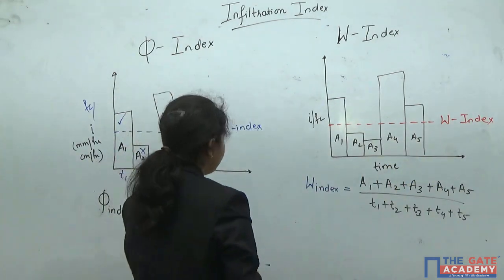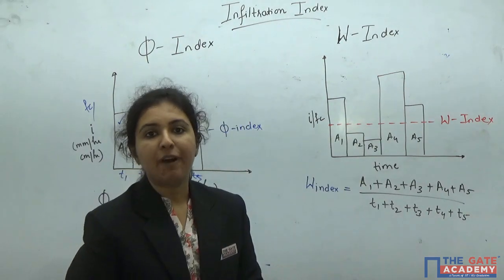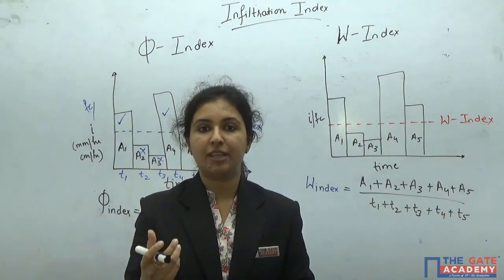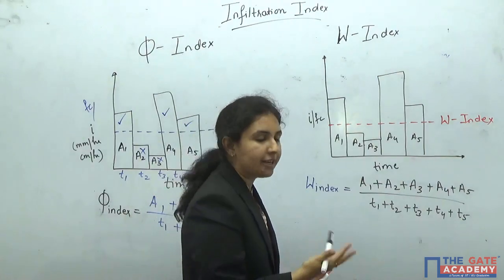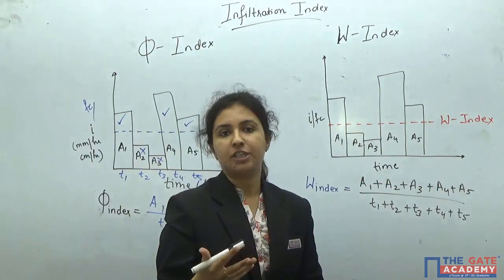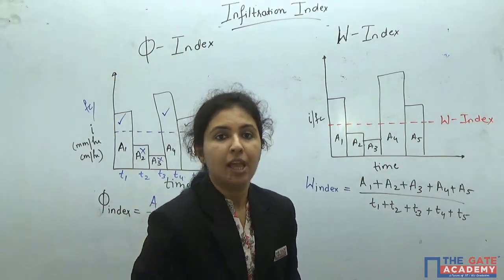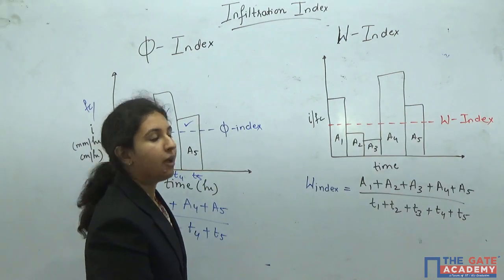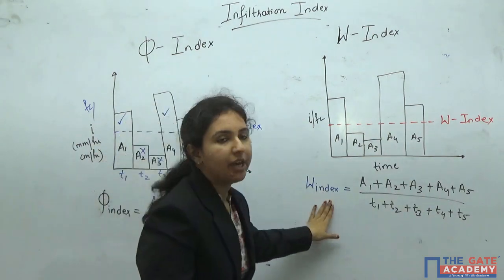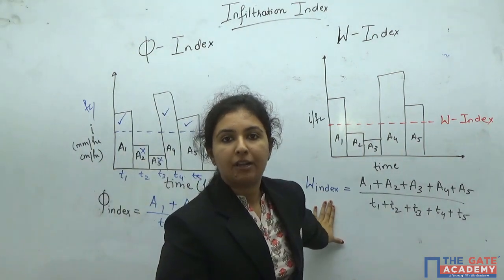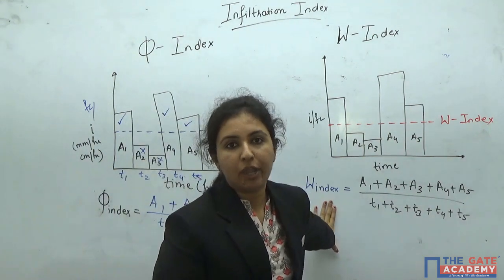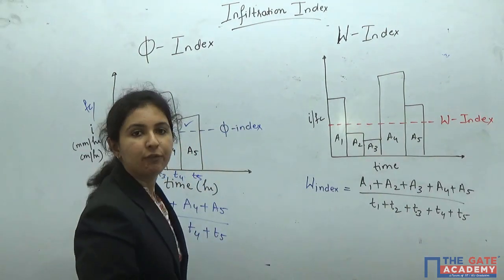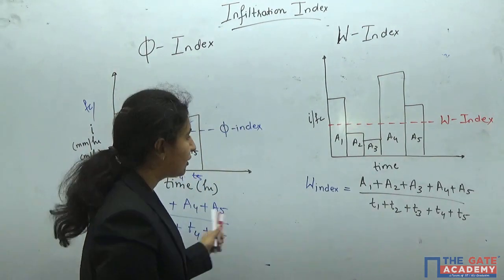The second difference: in Phi index, whatever the initial losses — like interception loss, depression storage — they are accommodated within the Phi index itself. But in W index we will separately subtract the initial losses. So if I want to derive the formulas for Phi index or W index — no need to memorize the formula, just understand the concept.